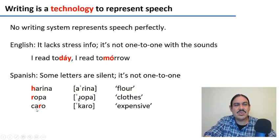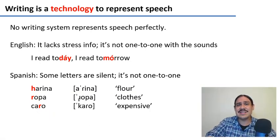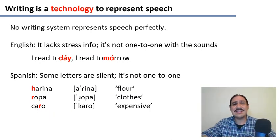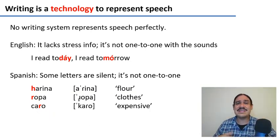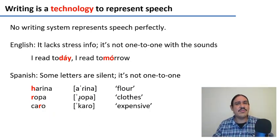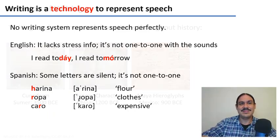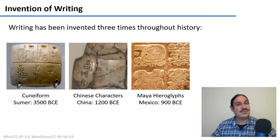Think of writing systems as different microwaves: they all reheat your food in slightly different ways and have slightly different buttons, but they all have the same function. None of them are food — they're just a vessel to transport food to you. Writing is a technology, and one of the most wondrous technologies that humanity has invented.